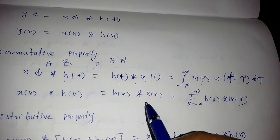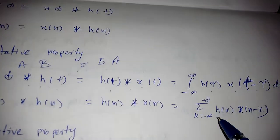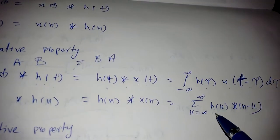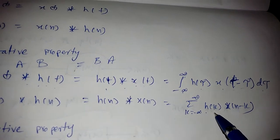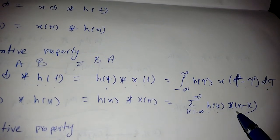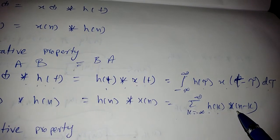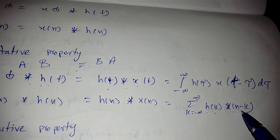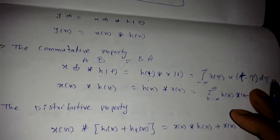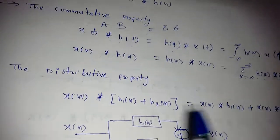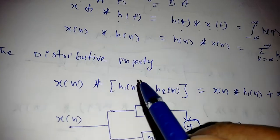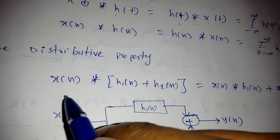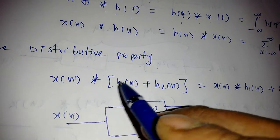For discrete-time signals, the commutative property similarly holds: in place of X of K we get H of K, and in place of H of N minus K we get X of N minus K.